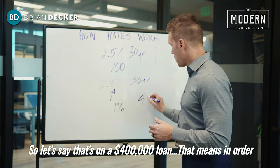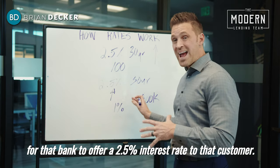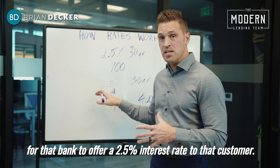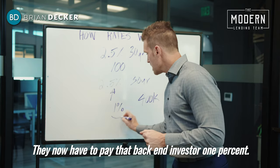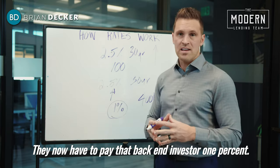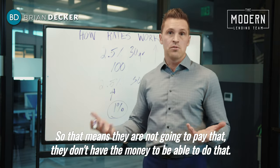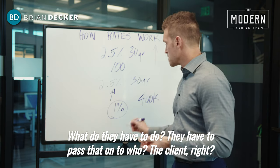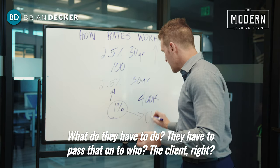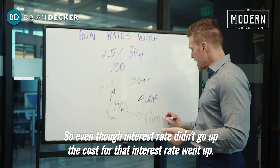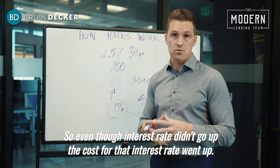Let's say that's on a $400,000 loan. In order for the bank to offer a 2.5% interest rate to the customer, they now have to pay that backend investor 1%. The bank doesn't have the money to absorb that cost, so they have to pass it on to the client. So even though the interest rate didn't go up, the cost for that interest rate went up.